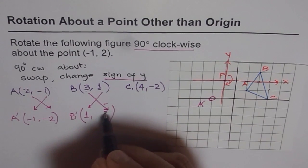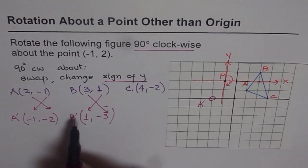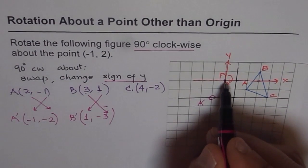1 here, 3 there, change the position, minus. It was plus, it becomes minus. So B' is 1 minus 3 from point P.